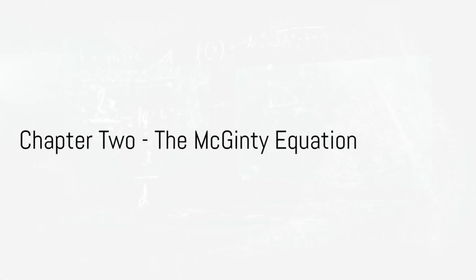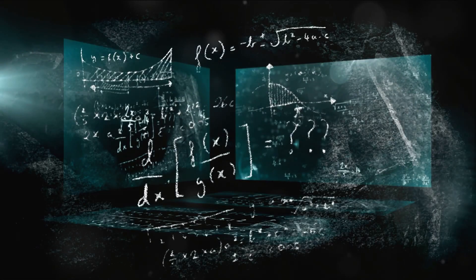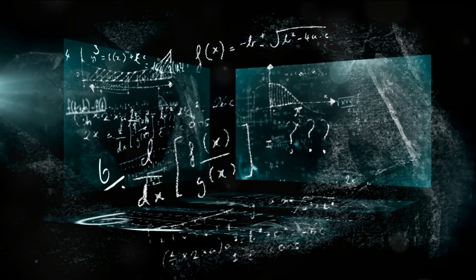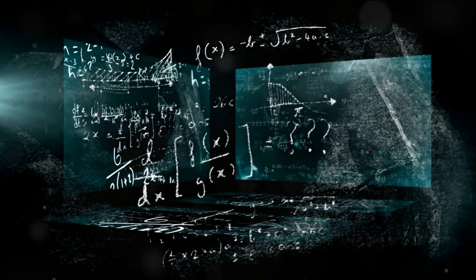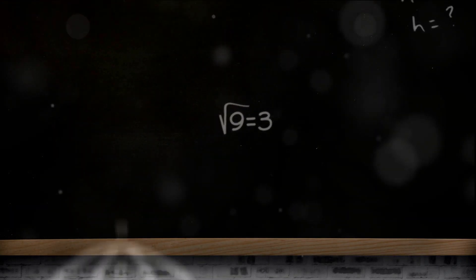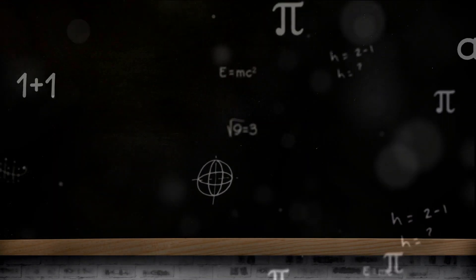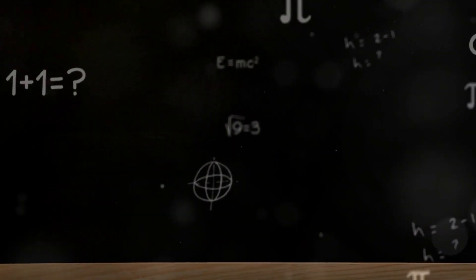Chapter 2 delves into the McGinty equation, a complex mathematical model that incorporates quantum field theory, fractal geometry, and gravitation. This equation forms the backbone of FTL theories and will be a recurring theme throughout our discussion.